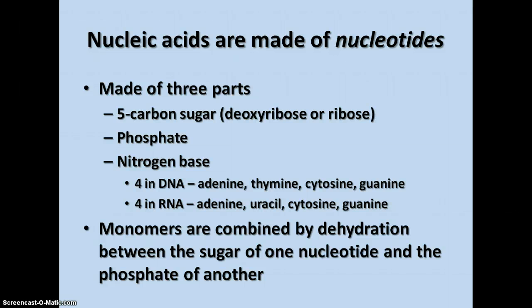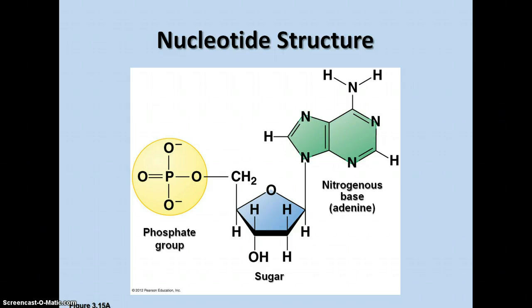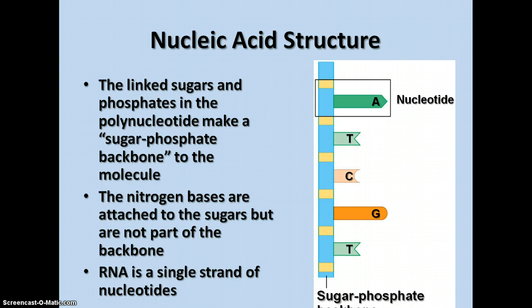The monomers — the nucleotides — are combined by dehydration between the sugar of one nucleotide and the phosphate of another. This is what a nucleotide looks like. You can see the phosphate group here, the sugar, and the nitrogen base. This particular one shown here is adenine. The sugars and phosphates are linked together in a sugar-phosphate backbone of the molecule. The sugars are the blue structures shown in the diagram, and the phosphates are the little orange rectangles. The nitrogen bases are attached to the sugars — they're not part of the backbone. They make up the rungs of the ladder.